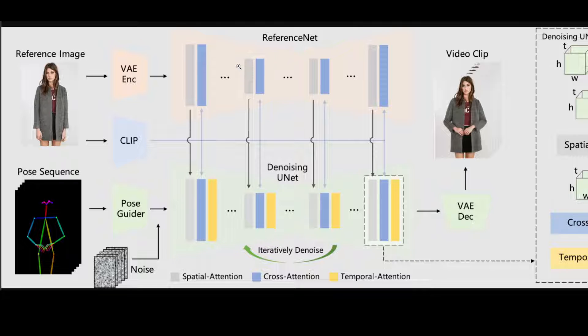Now the integration of reference image involves two aspects. Firstly detailed features are extracted through reference net and utilized for spatial attention. And secondly semantic features are extracted through the CLIP image encoder for cross attention.